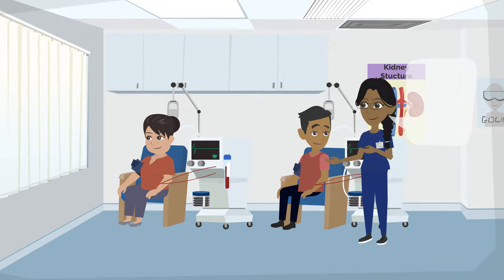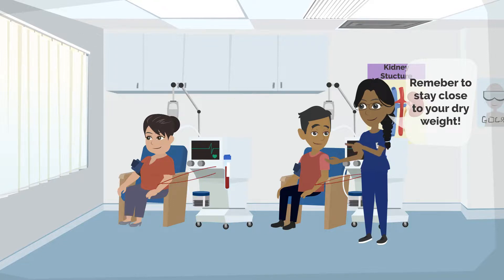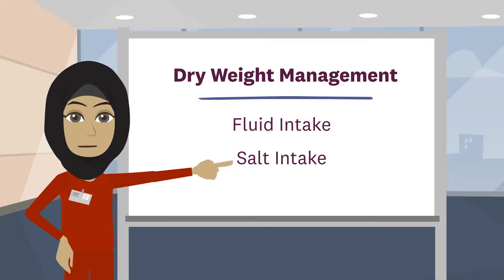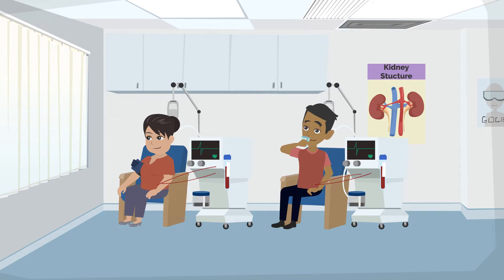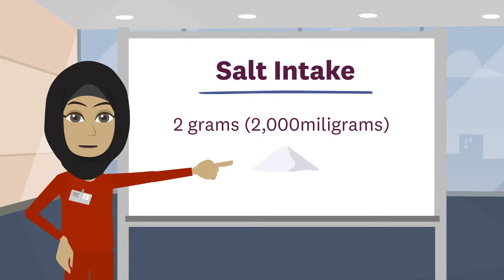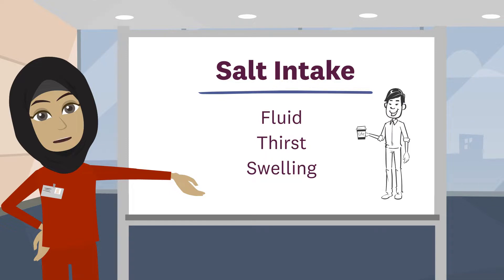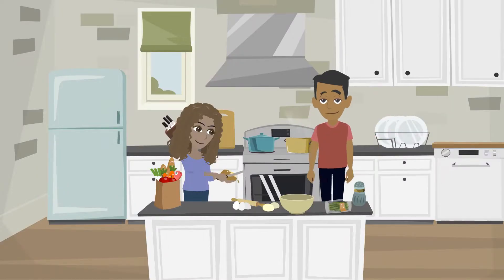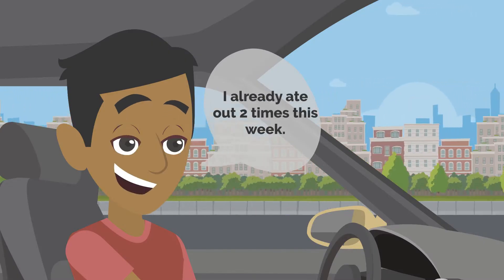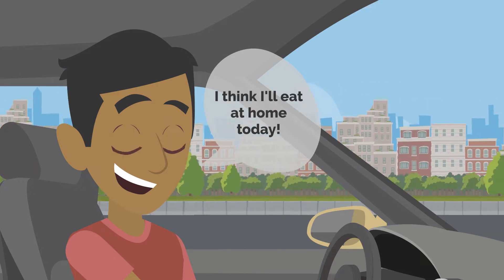Once you have completed your dialysis treatment, it is important to try and stay as close to your dry weight as possible. This will limit the amount of stress on your body. To maintain your dry weight, you need to watch the amount of fluid and salt you consume, both during and after treatments. What you drink during your dialysis treatment is not removed during your current treatment — it will contribute to the fluid that will need to be removed during your next visit. Salt is restricted to 2 grams or 2,000 milligrams per day in order to help control fluid, thirst, and swelling. To reduce the amount of salt in your diet, try flavoring with spices and herbs instead of salt, and try to also reduce how often you eat out, as these foods are highly processed and contain high amounts of salt.